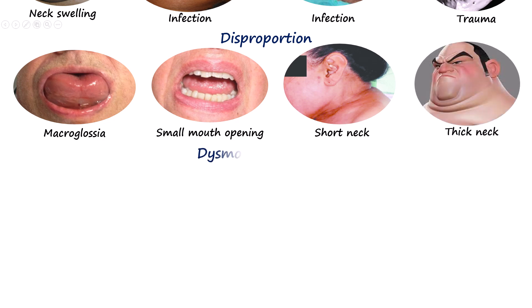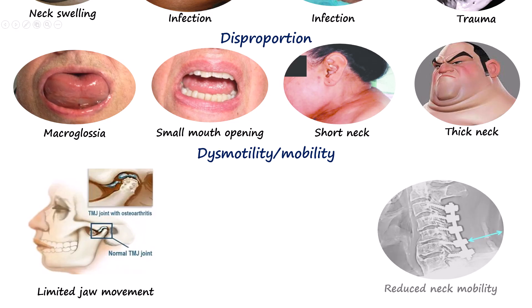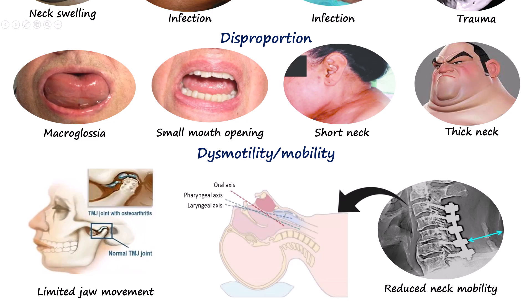The fourth D is dysmotility, which refers to restricted movement of the jaw or cervical spine that can complicate airway management. Limited jaw opening — such as in trismus, temporomandibular joint disorders, or post-radiation fibrosis — reduces the space for inserting and maneuvering the laryngoscope blade. Reduced neck mobility, seen in cervical spine injury, arthritis, or ankylosing spondylitis, prevents optimal head extension and alignment of the oral, pharyngeal, and laryngeal axes, making glottic visualization more difficult.